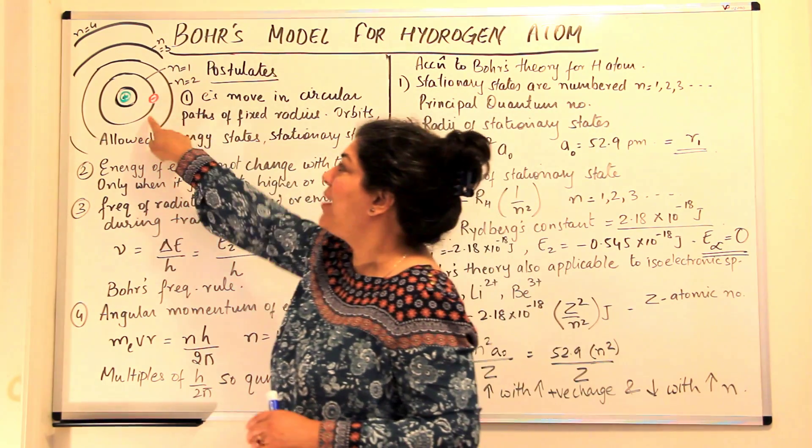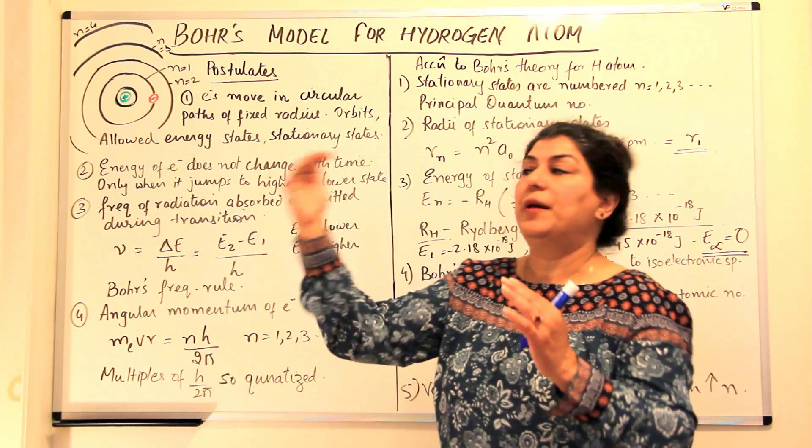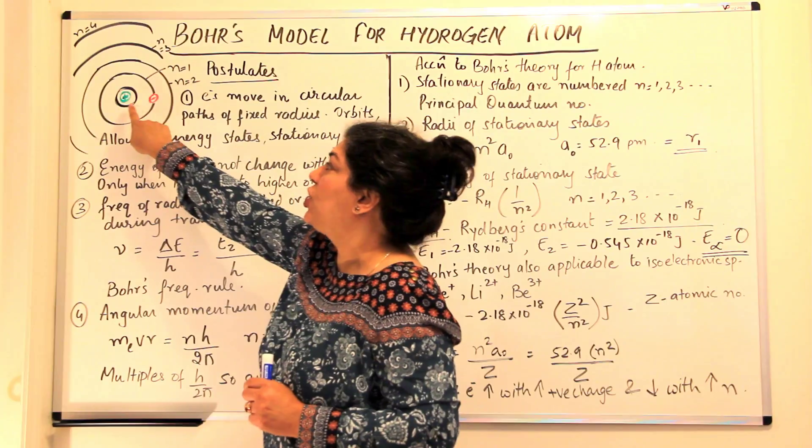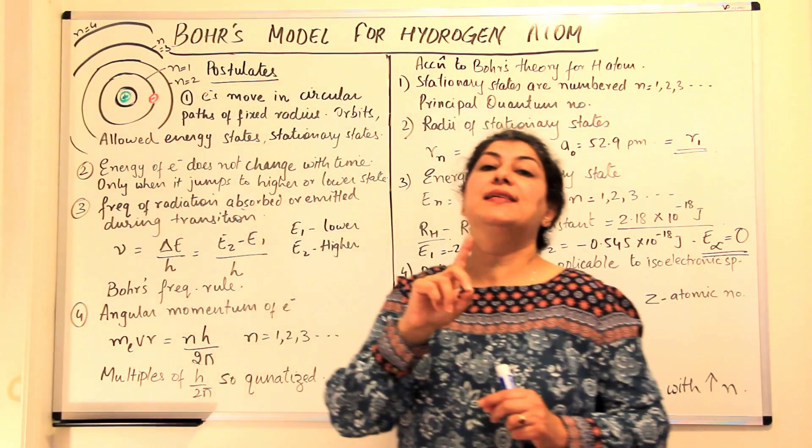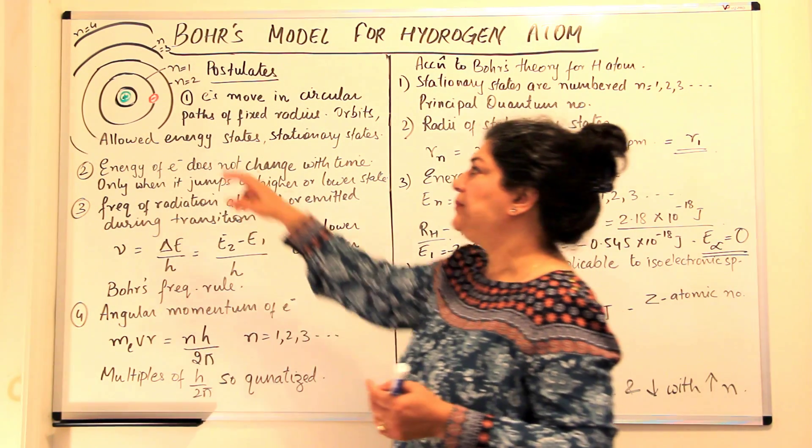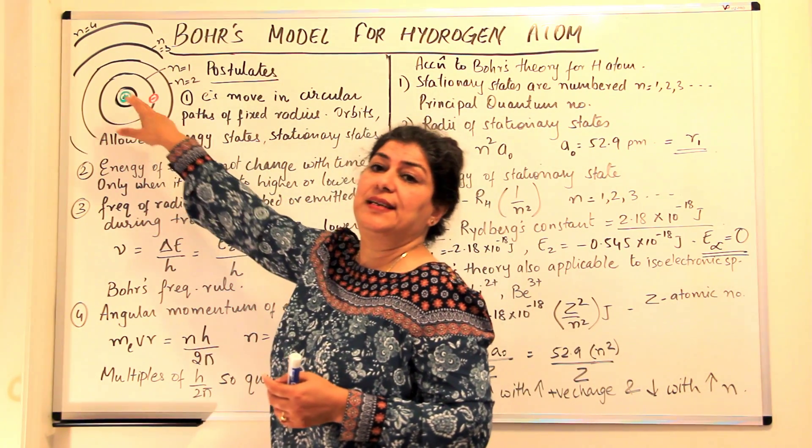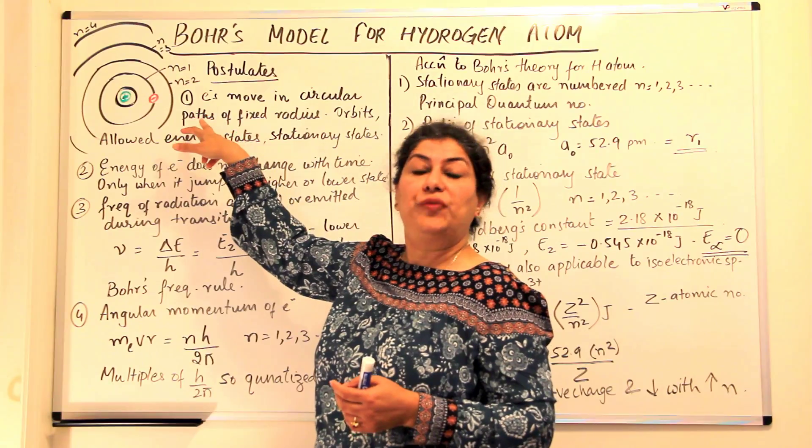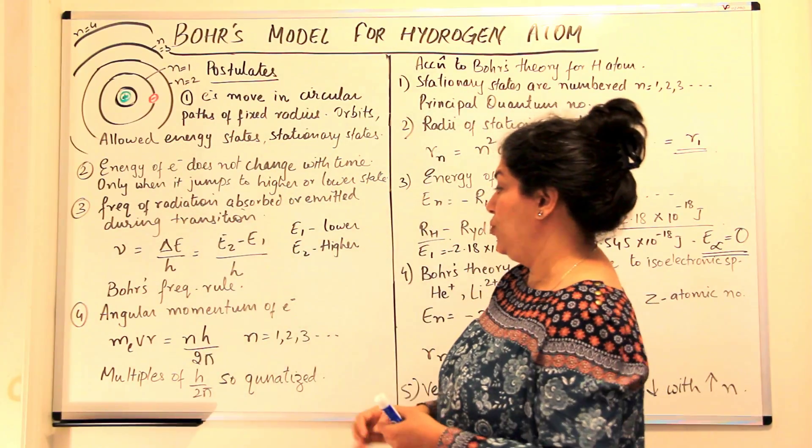So these energy states have been named or have been numbered. The energy level that is closest to the nucleus is known as the first energy state. So n would be equal to 1 for the first energy state, n would be 2 for the next energy state, n is equal to 3 for the third energy state and so on.